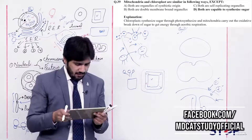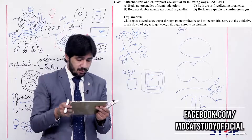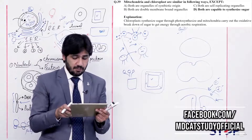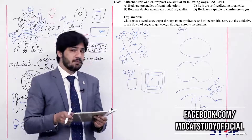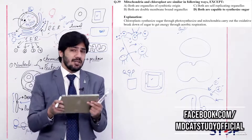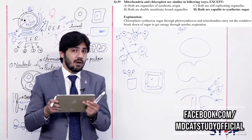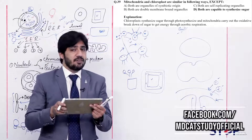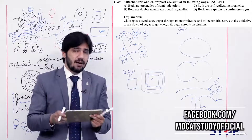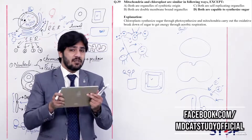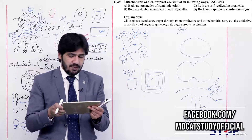Question 39: Mitochondria and chloroplasts are similar in the following ways except — (alpha) both are organelles of symbiotic origin, (beta) both are double membrane-bound organelles, (charlie) both are self-replicating organelles, (delta) both are capable of synthesizing sugar. Both organelles share symbiotic origin, double membrane structure, and self-replication ability. However, they differ in that chloroplasts synthesize sugar but mitochondria break it down. So the difference is in delta — both capable of synthesizing sugar.